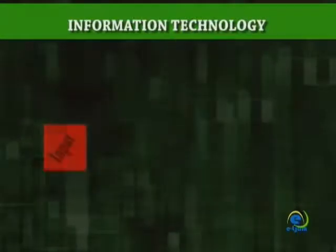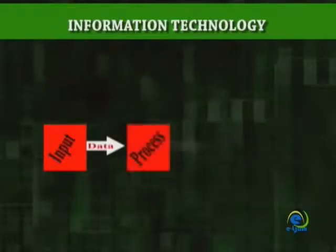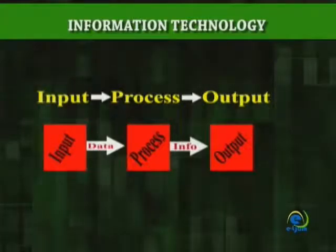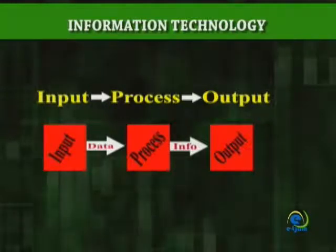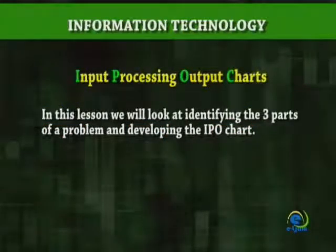So as to be able to partition a simple problem into three parts, it is important that you understand the data that needs to be supplied to solve the problem — that is, the input; what needs to be done with the input data — that is, the processing; and the expected results of the processing. This can be done with the help of an Input Processing Output IPO chart. In this lesson, we will look at identifying the three parts of a problem and developing the IPO chart.